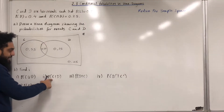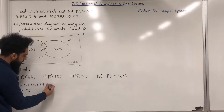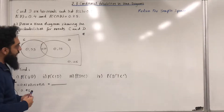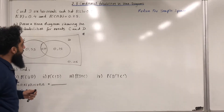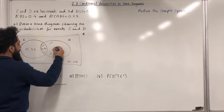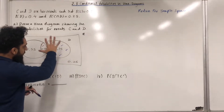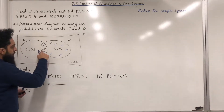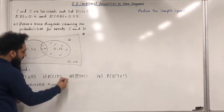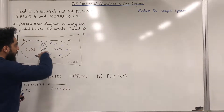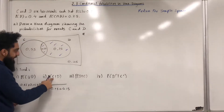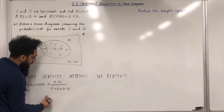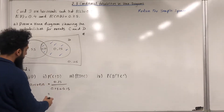Part 2: probability C given that event D takes place. We reduce the sample space to event D, so I shade in event D. The probability will be out of 0.25 plus 0.15. For event D, the part that represents event C is 0.25, so in the numerator I put 0.25. Calculating this gives 0.625.